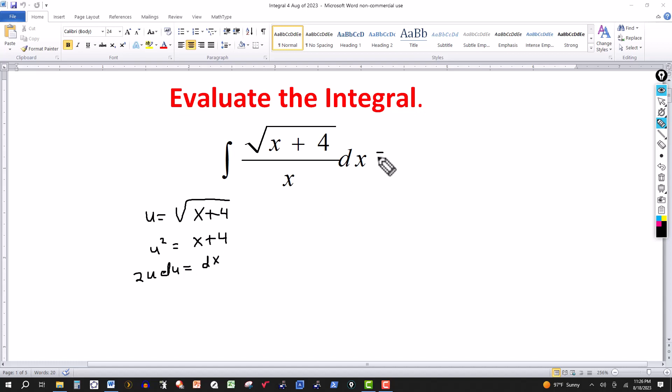Let's see, we can transform this to an integral involving the variable u. The square root of x plus 4, this is your u. dx will be 2u du.